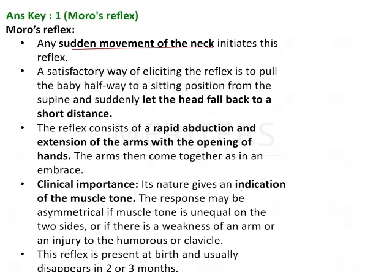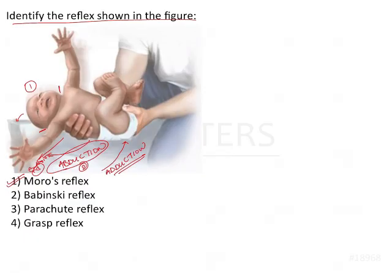This reflex is important to elicit because it gives us an indication about the muscle tone of the child. Because the arms of the child are raised, we can see whether the response is symmetrical or asymmetrical. In case there is any weakening of muscle tone or any injury to the shoulder or the arms, this reflex will not be symmetrical.